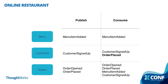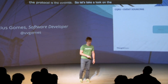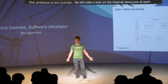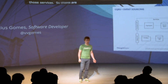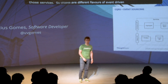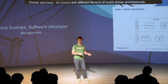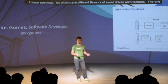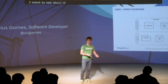Now the protocol of communication between services are the events. Each service will have a list of events that they publish and a list of events that they consume. Let's take a look at the internal structure of each one of those services. There are different flavors of event-driven architectures. The one I want to talk about today is the one based on Command Query Responsibility Segregation (CQRS) and Event Sourcing.